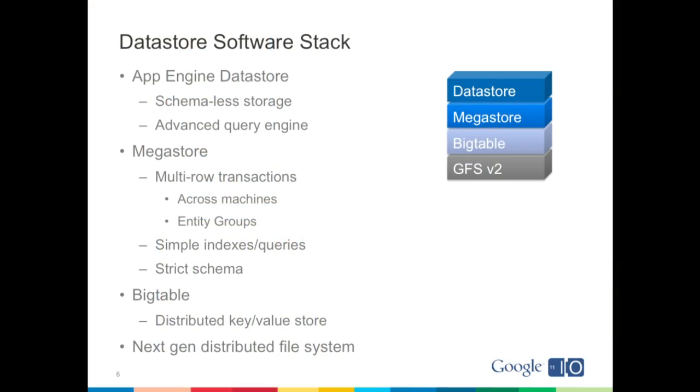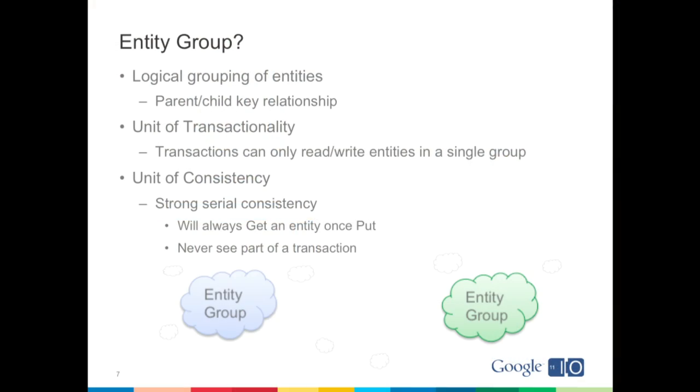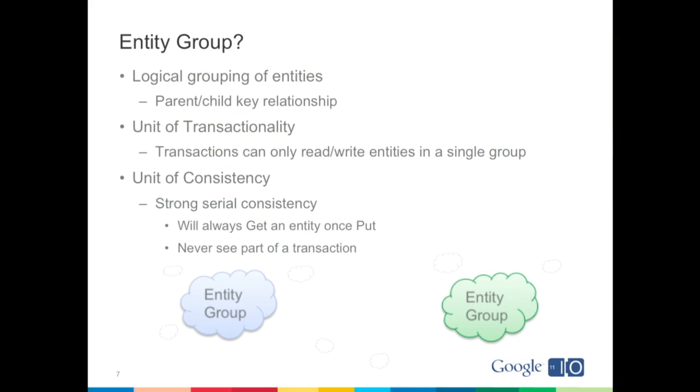You might be asking yourself: what's an entity group? Up until the High Replication Datastore, you didn't really have to care that much. An entity group is a logical grouping of entities through a parent-child key relationship. It functions as a unit of transactionality, as Matt said — transactions can only read and write to entities in a single entity group. So if you want to change entities in the blue entity group and the green entity group, there's no way to do that atomically. But within a single group, you can perform atomic transactions. More importantly, for the High Replication Datastore, it is a unit of consistency — entity groups enforce strong serial consistency. What you put, you will always get after that put, and you will never see part of a transaction; you either see all or none.